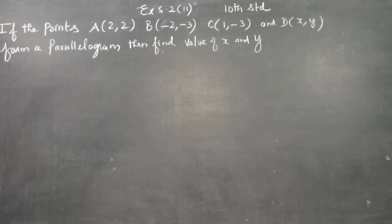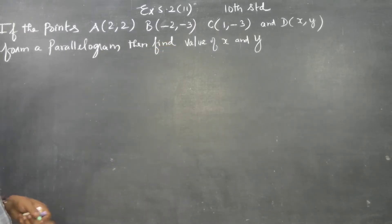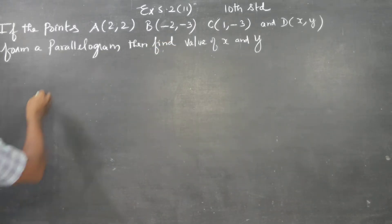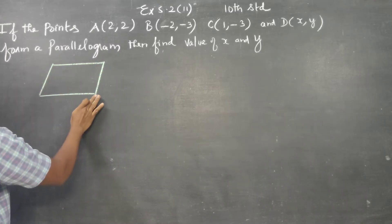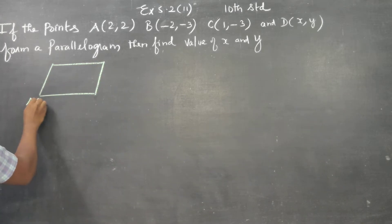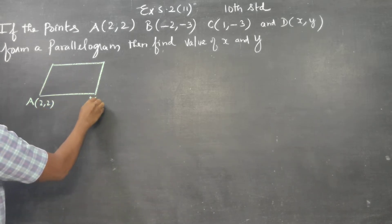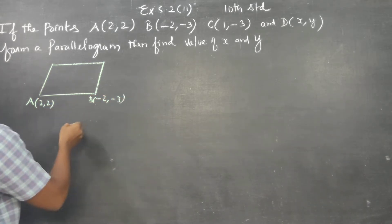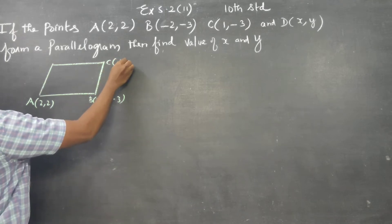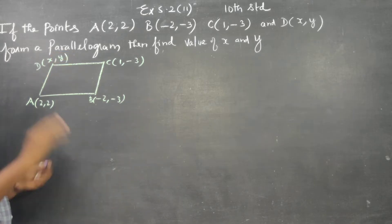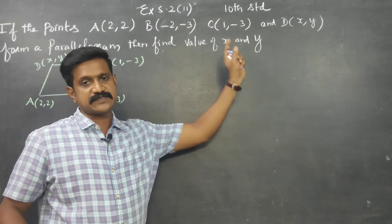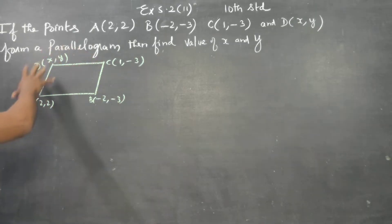I am going to use the concept of slope. This is a parallelogram. My A is (2, 2), my B is (-2, -3), my C is (1, -3), and D is (x, y). These are my vertices of a parallelogram.